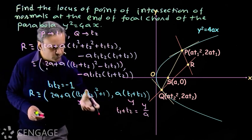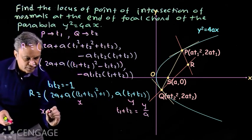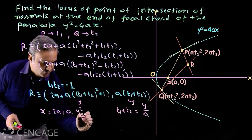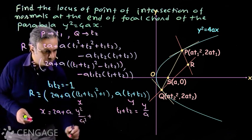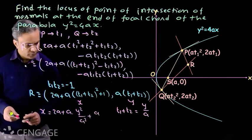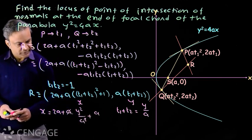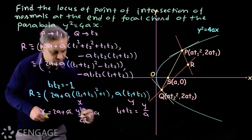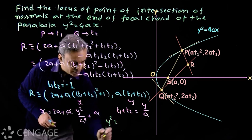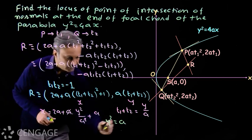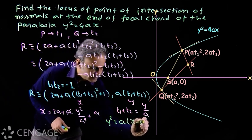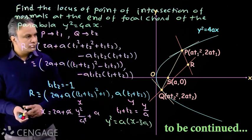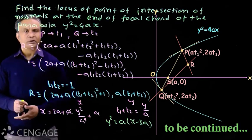Substituting t₁ + t₂ = y/a into the x-coordinate expression, we get x = 2a + a[(y/a)² + 1], which simplifies to x = 2a + y²/a + a. Therefore the locus of point R is a parabola.